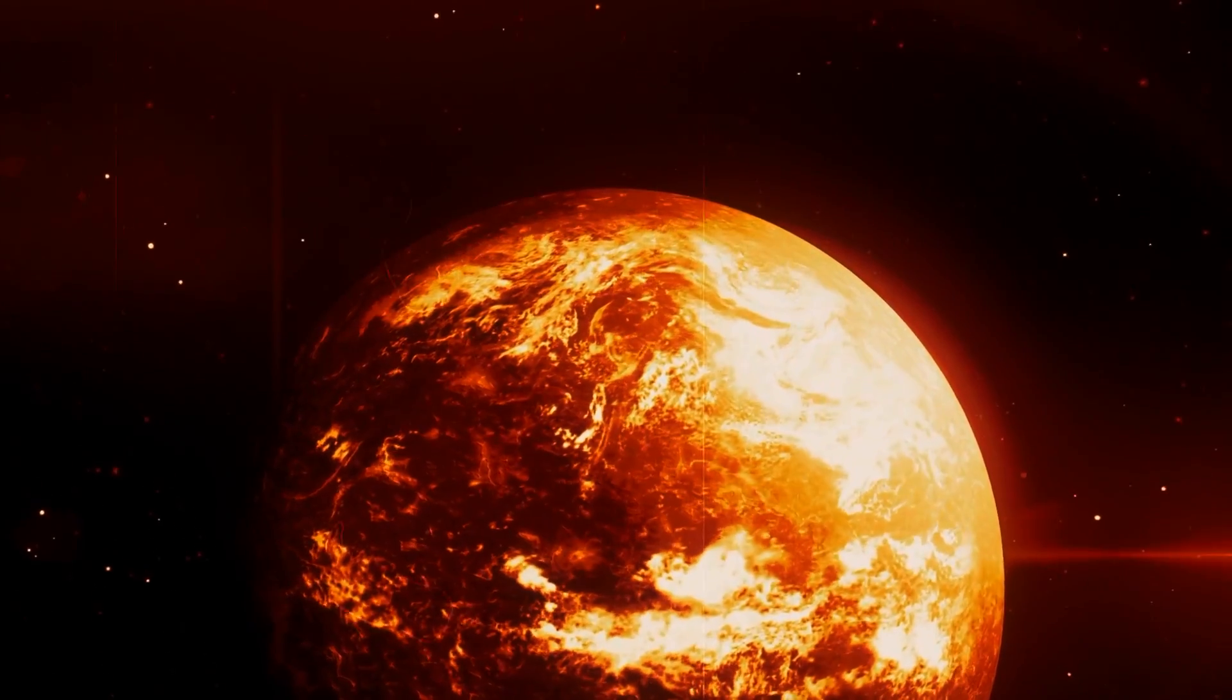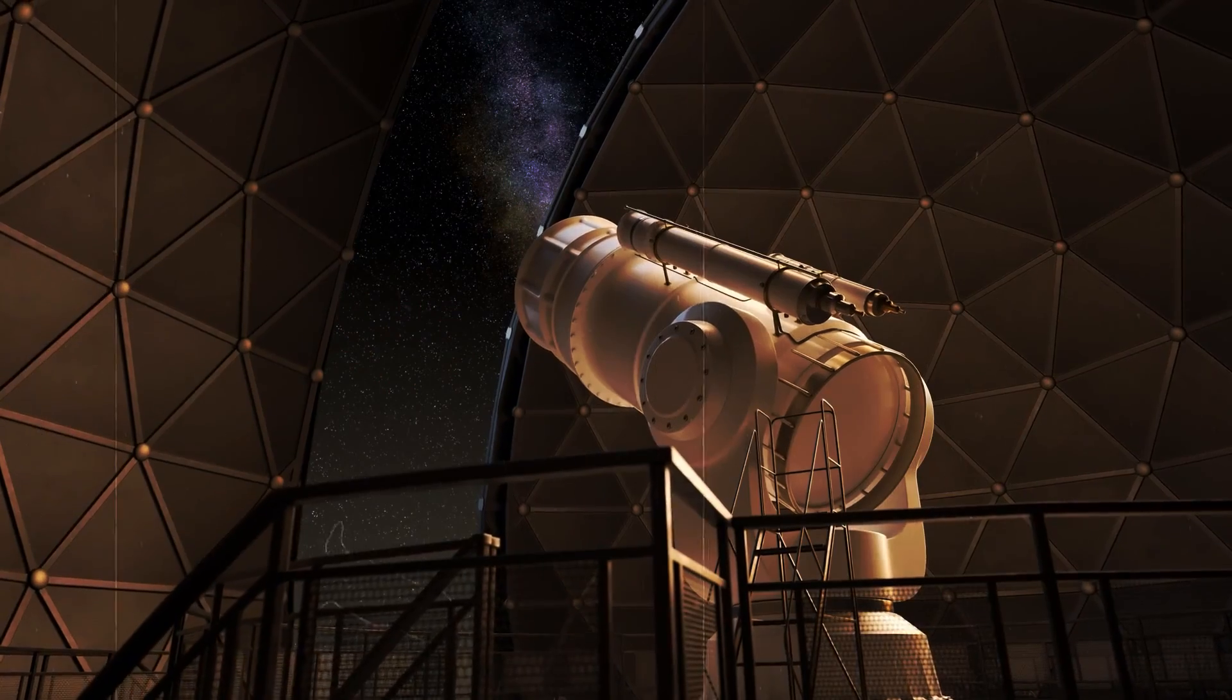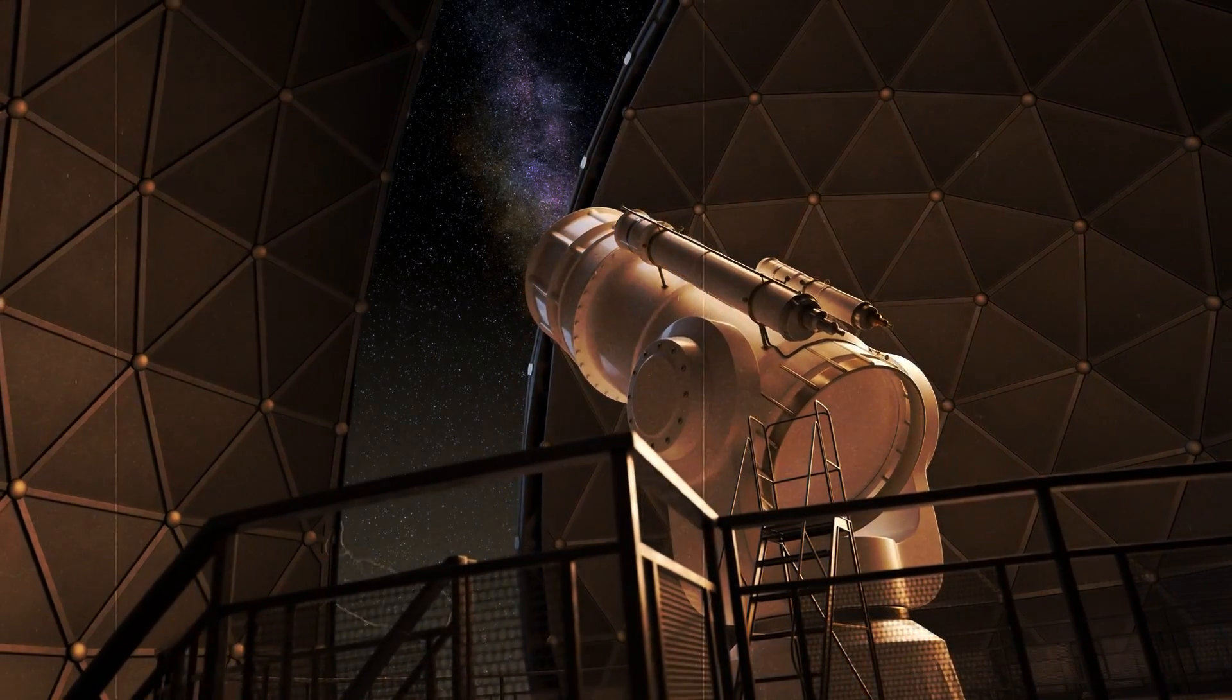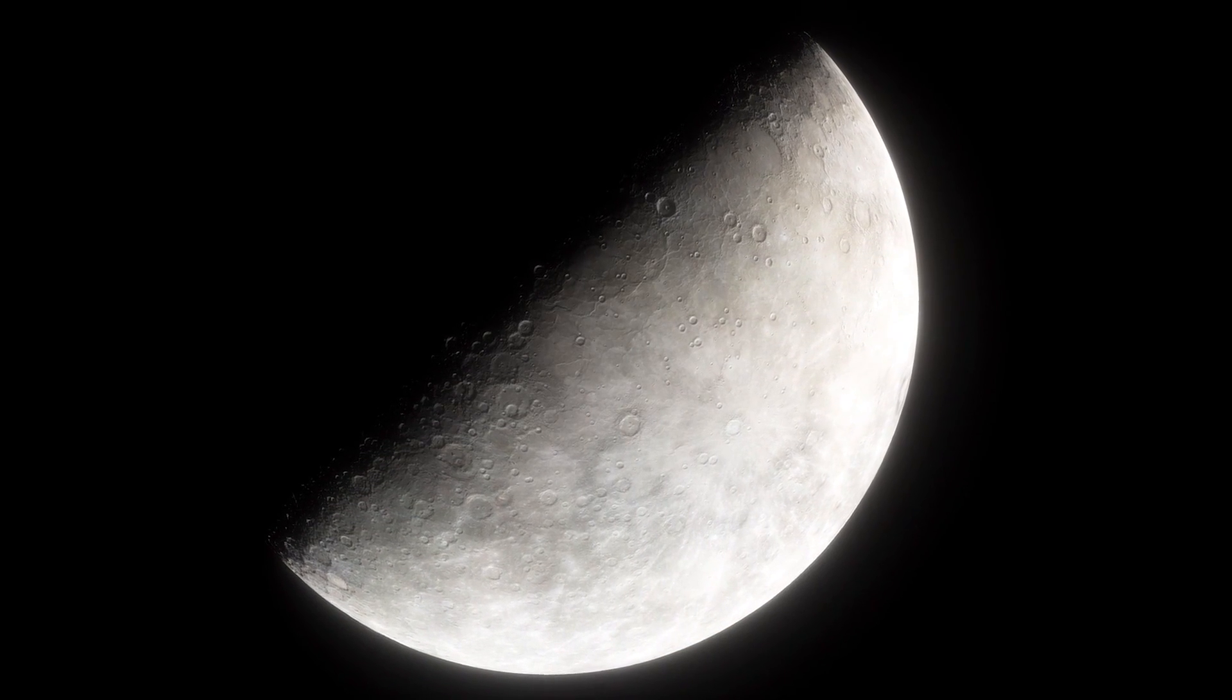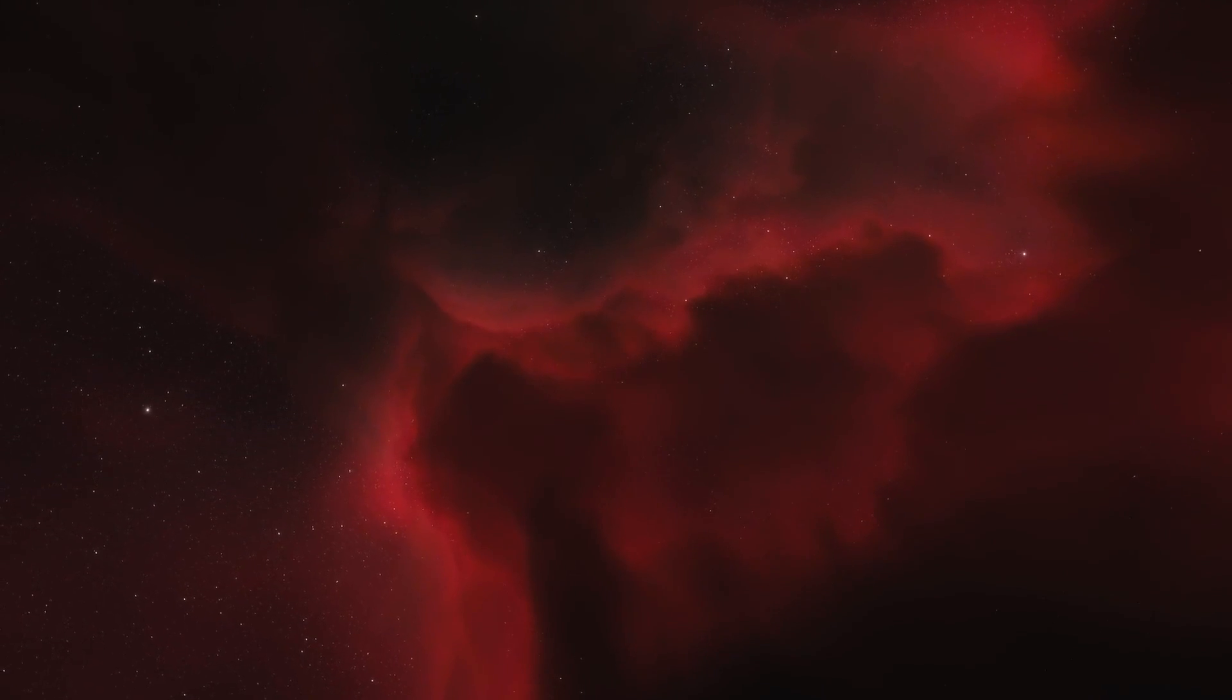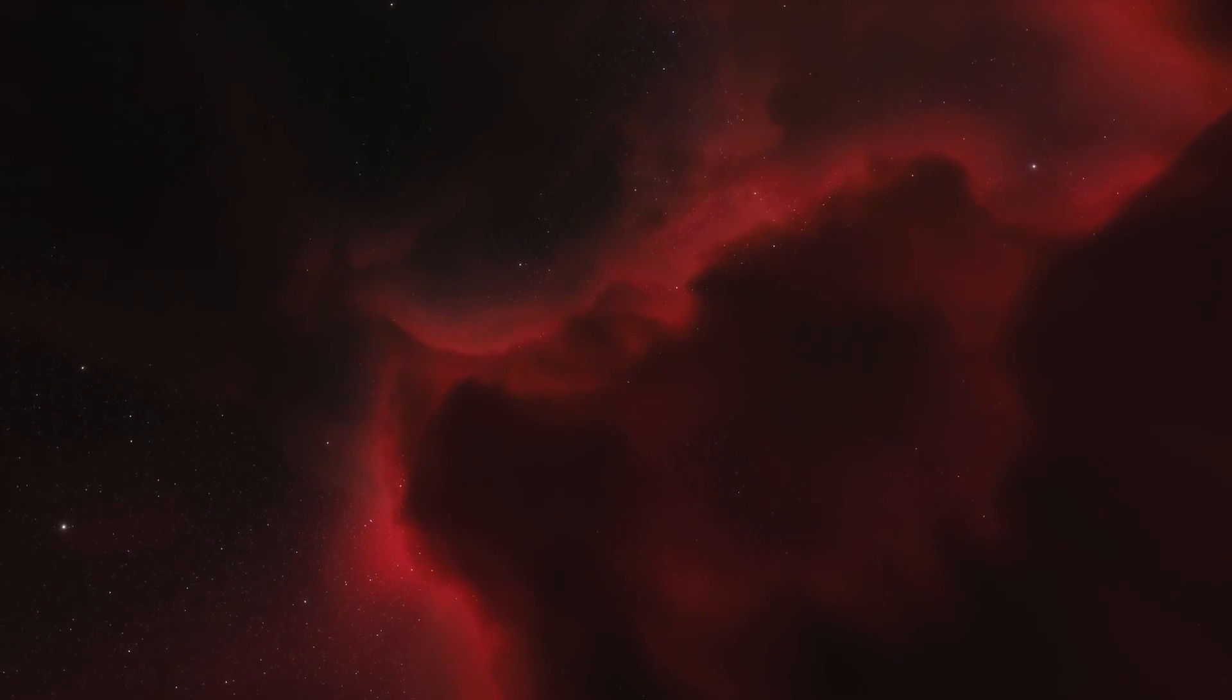This supposed planet called Vulcan was searched for intensively for many years. It was only when improved telescopes made it clear that there could certainly be no other planet between Venus and the Sun that the Vulcan theory was abandoned. Nevertheless, the deviations in Mercury's orbit could never be fully explained, which is why this deviation is still regarded today as the door opener for the idea of additional invisible matter.